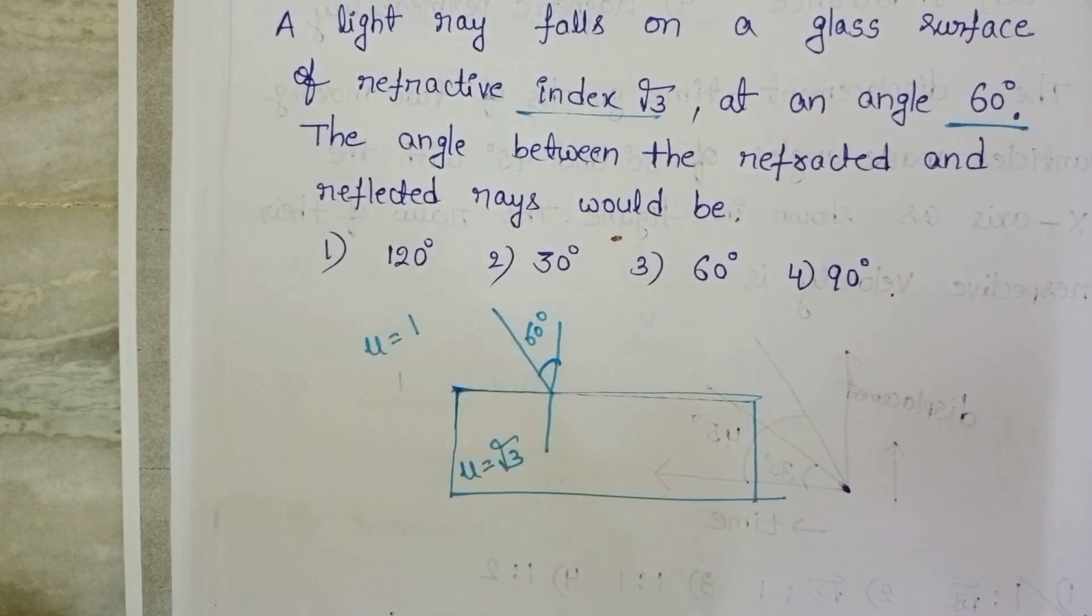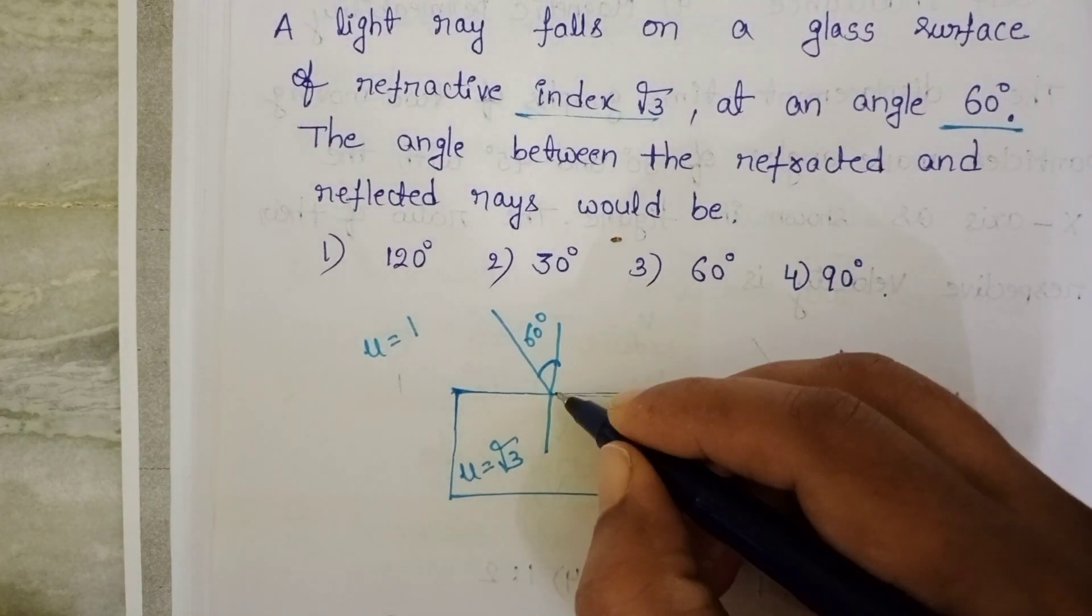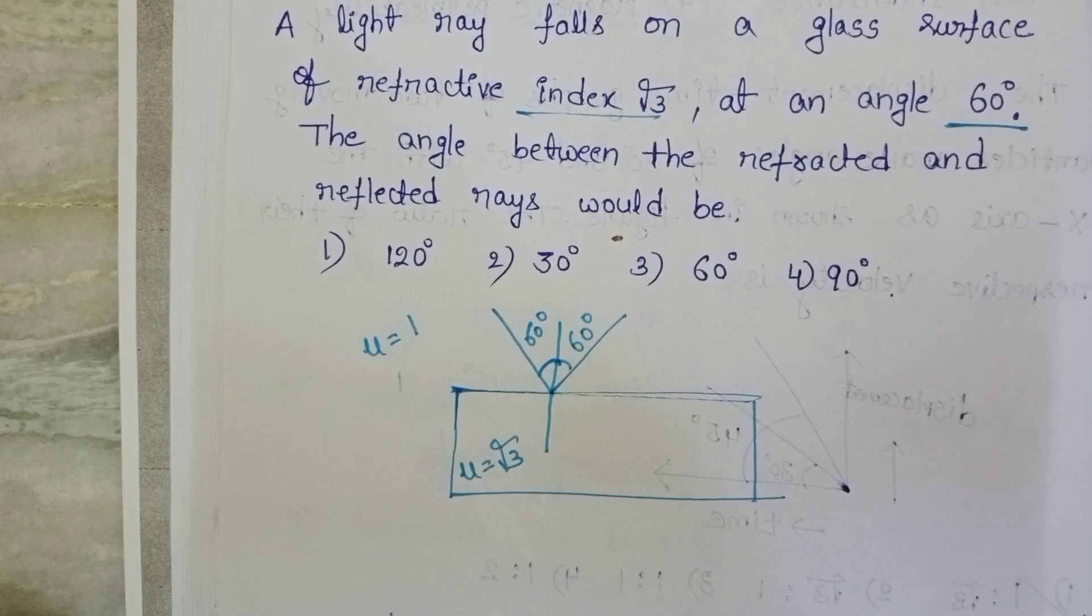Take the first medium as air medium, refractive index equals 1. When angle of incidence is 60 degrees, then angle of reflection is also 60 degrees.